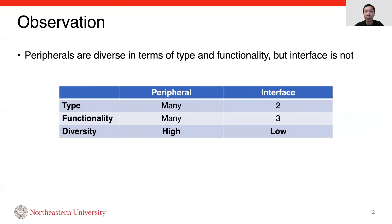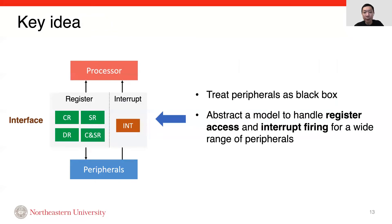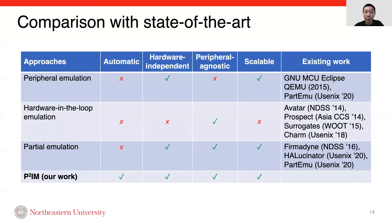To achieve our goals, we first observe the behavior of peripherals and interface. We found peripherals are diverse in terms of type and functionality, but interface is not. Based on our observation, we present a solution focusing on the interface instead of peripherals, as existing solutions do. Therefore, we don't need to emulate any peripherals. The key idea is we treat peripherals as black boxes, and we abstract a model to uniformly handle register access and interrupt firing for a wide range of peripherals. Our solution can achieve all the design goals, while state-of-the-art works can only achieve them partially.